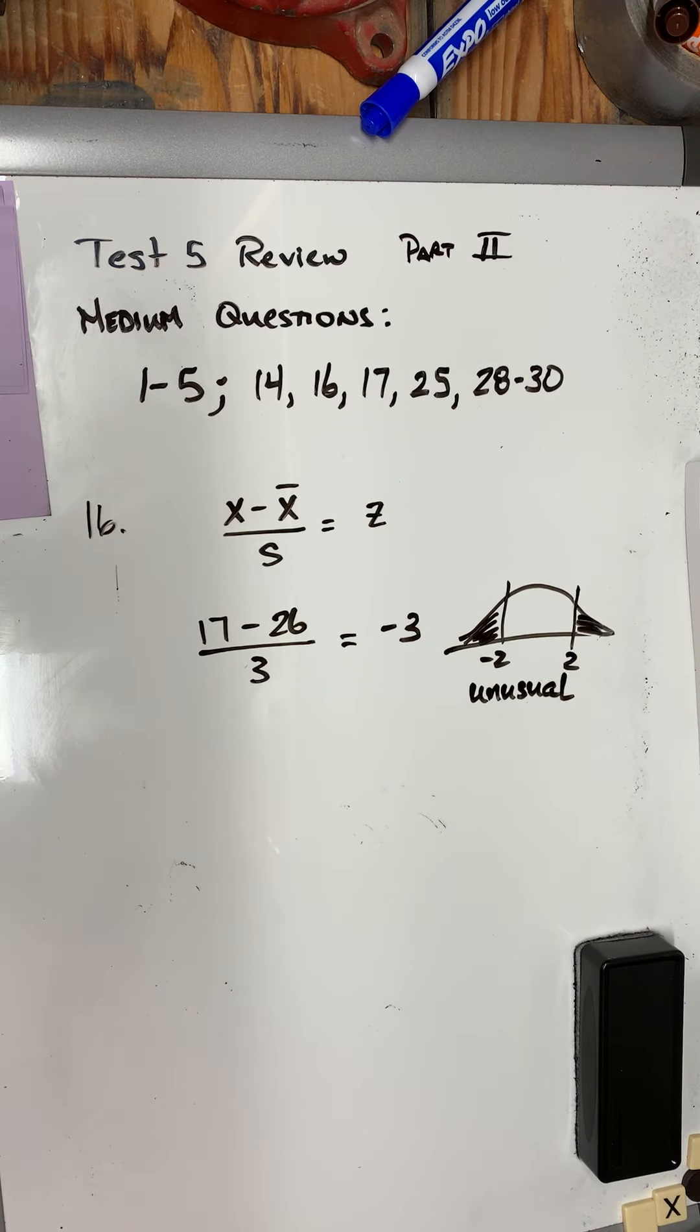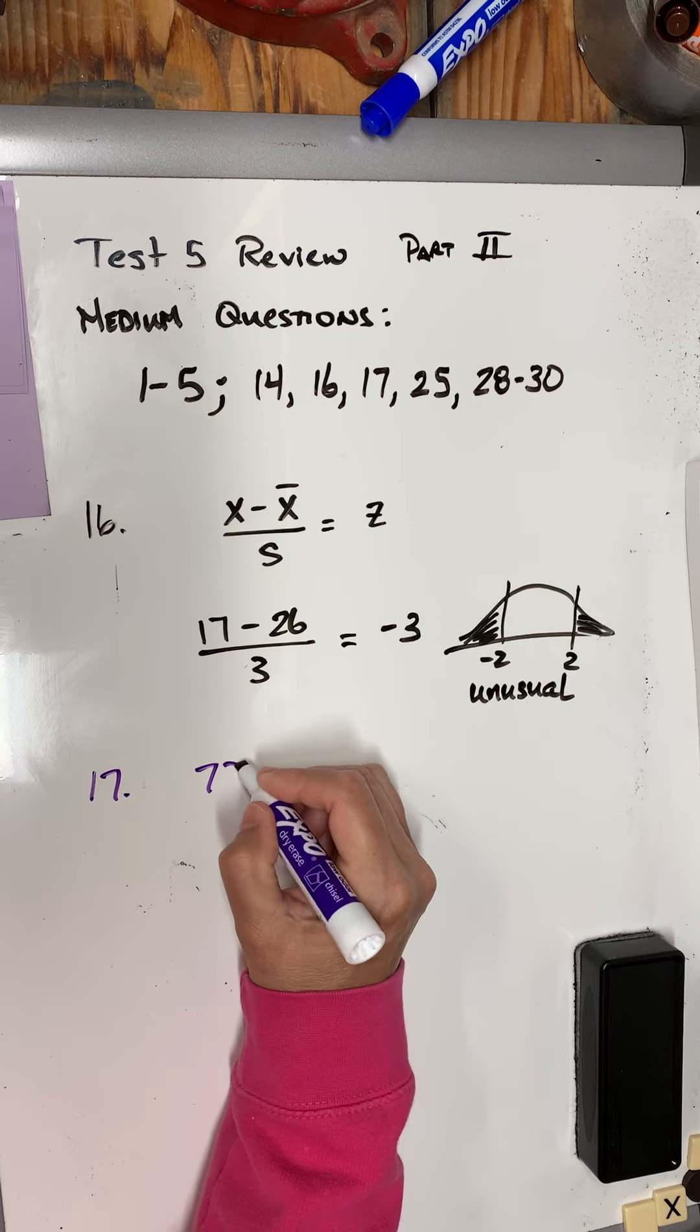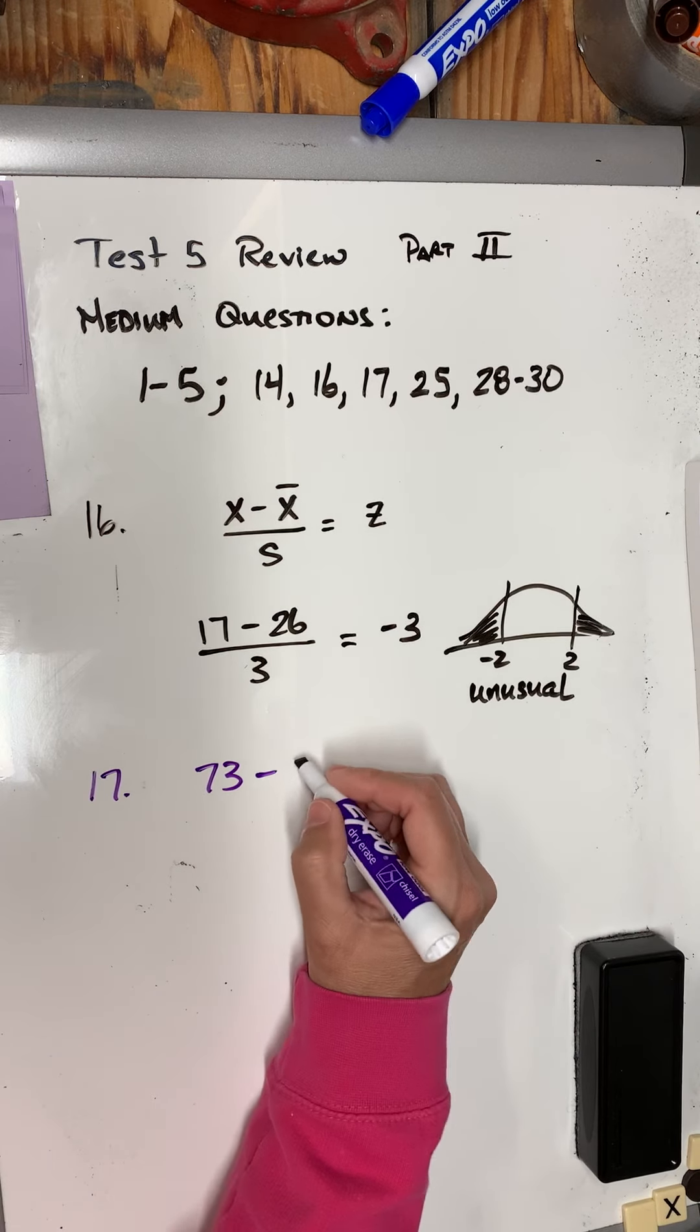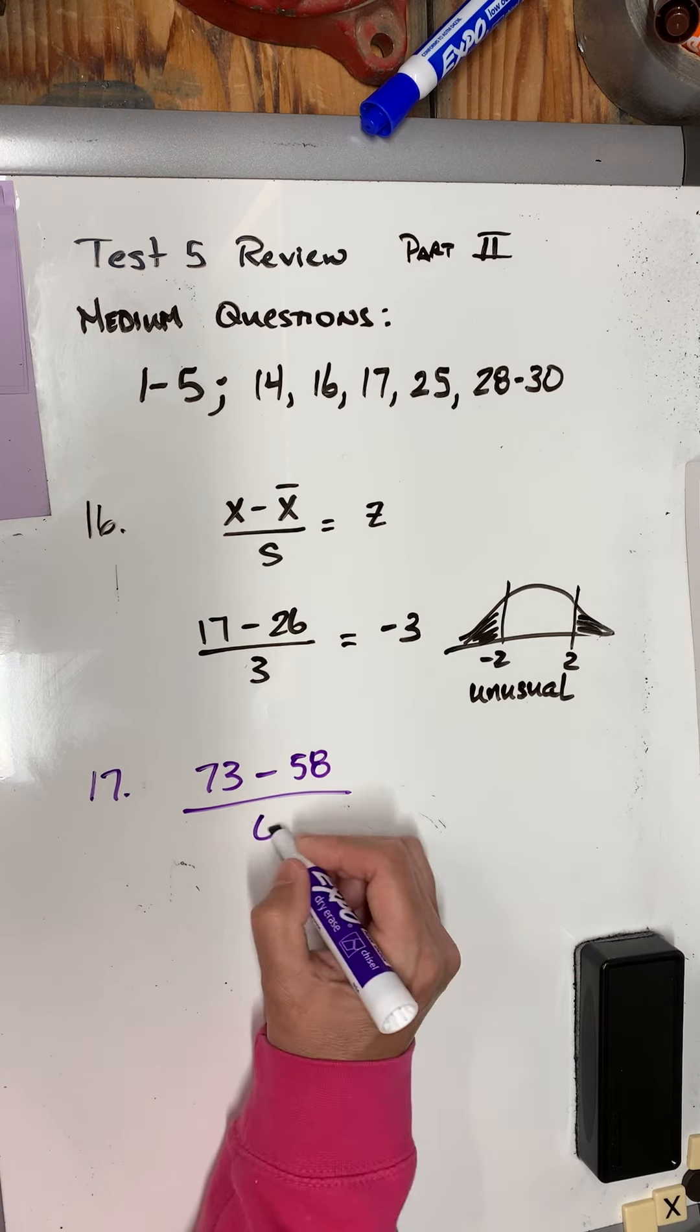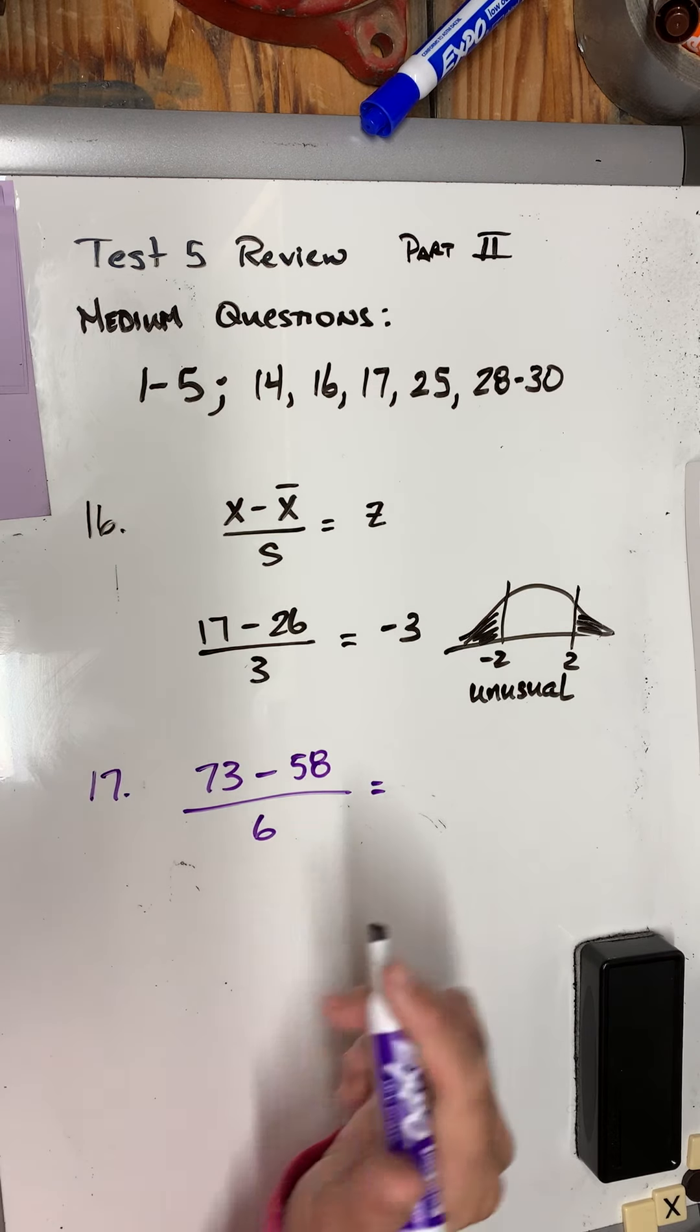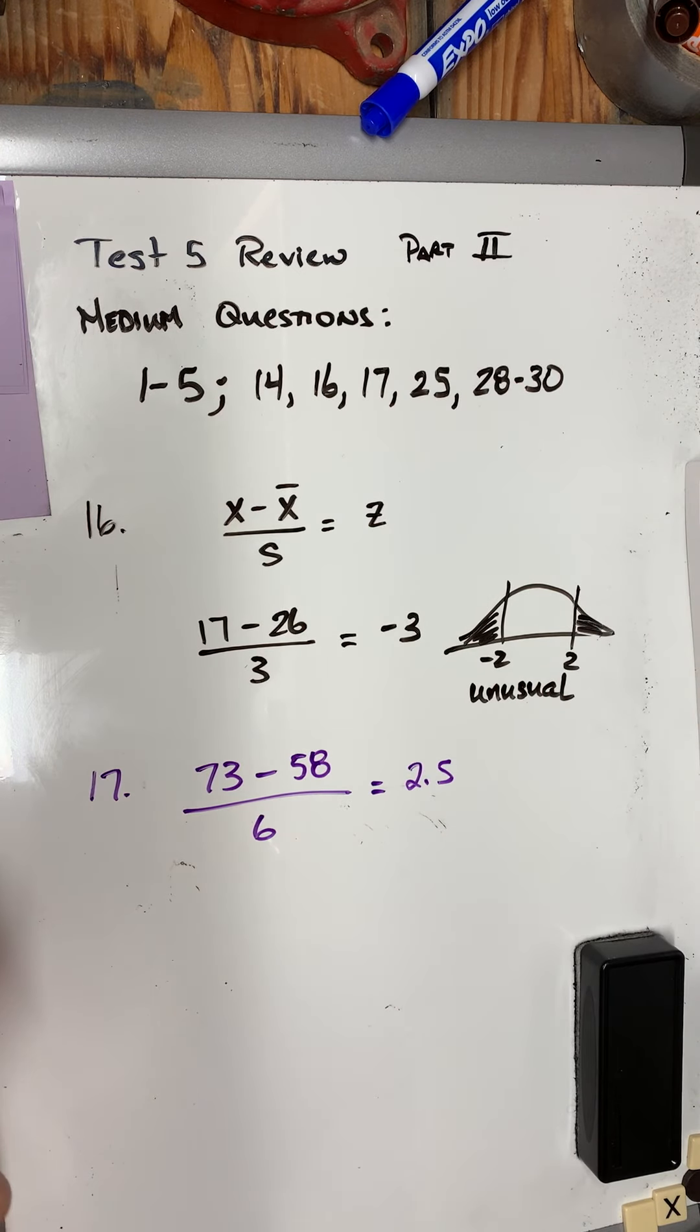All right, let's move on to number 17. 17 is a similar question. I'm going to use the same formula. A police car is driving down the highway at 73 miles per hour—so that's the individual police car. The average speed of drivers on the highway is 58, so that's my average, and the standard deviation is 6. So they want me to find the z-score: 73 minus 58 is 15 divided by 6, which is 2.5. Is this unusually high? Yes, because it's beyond the 2.